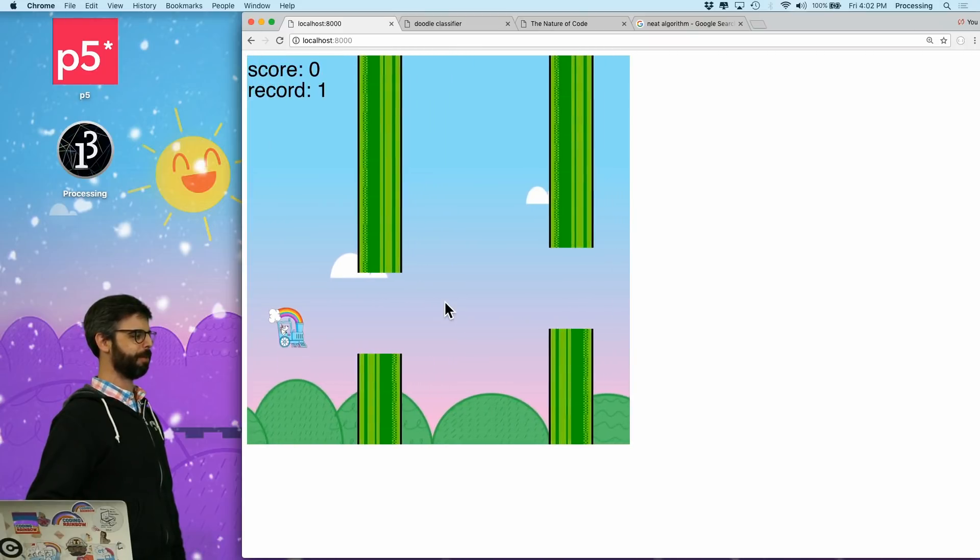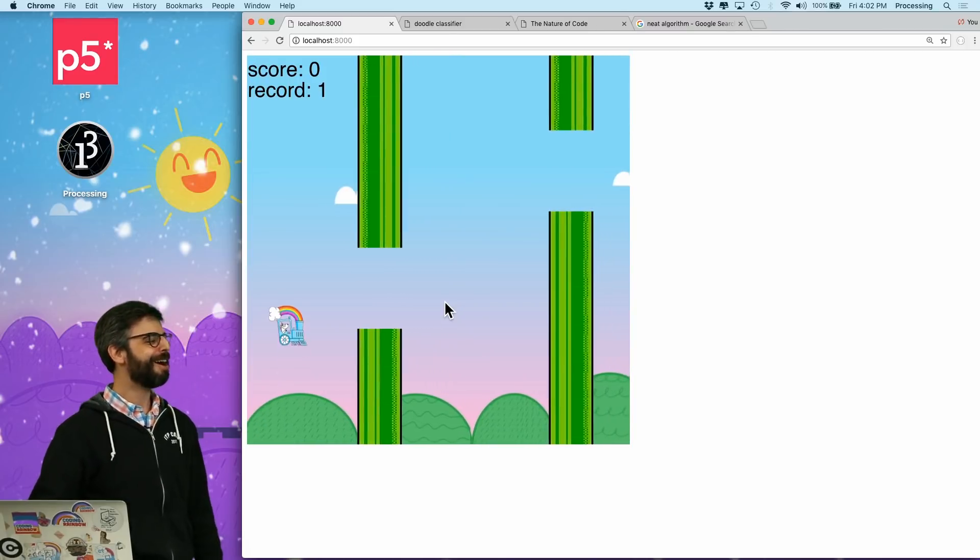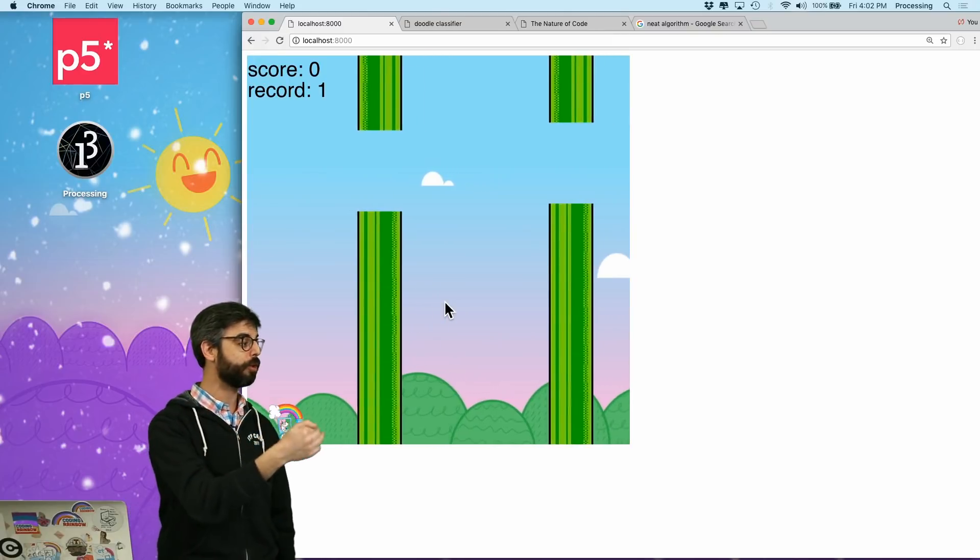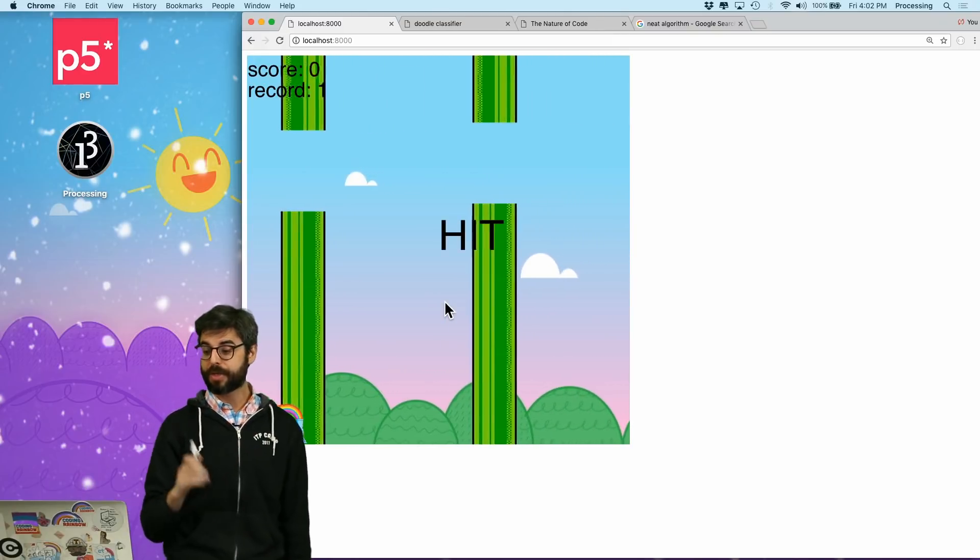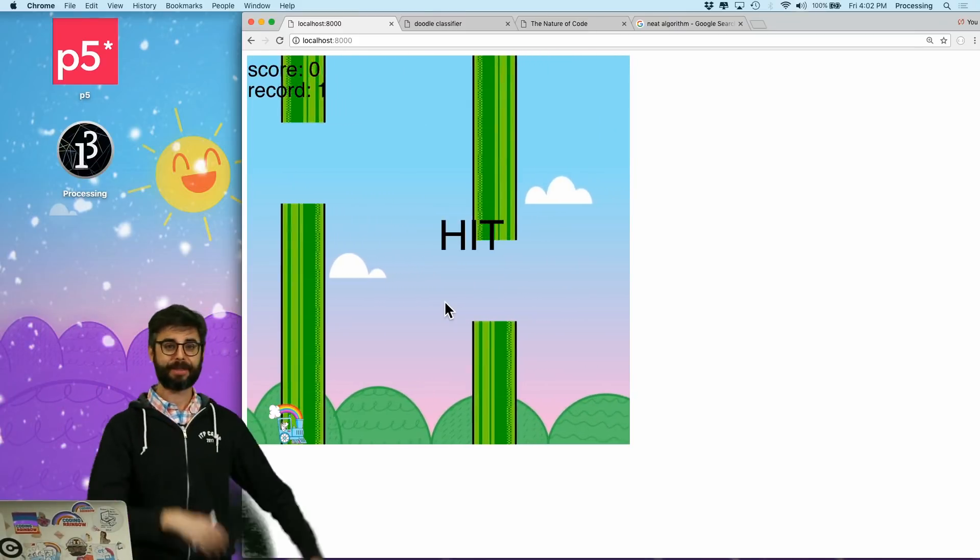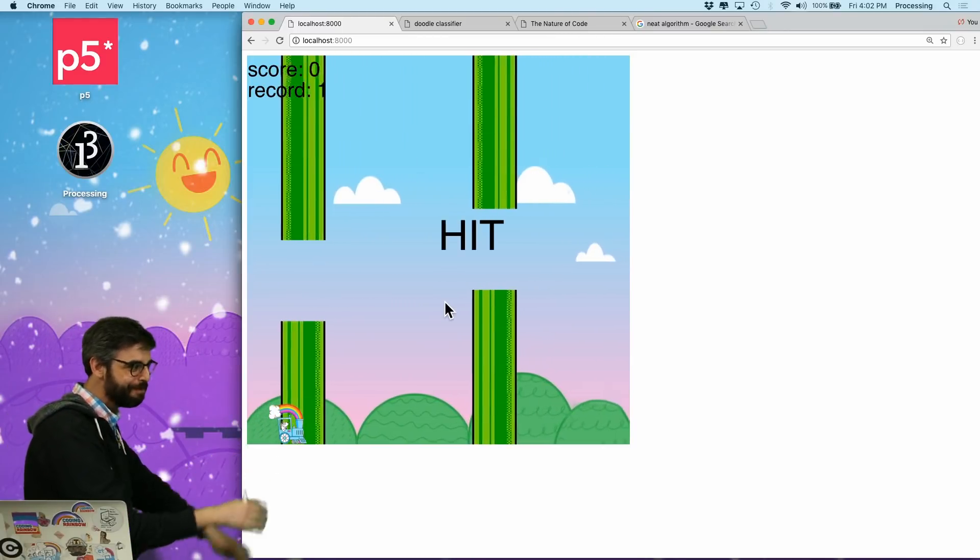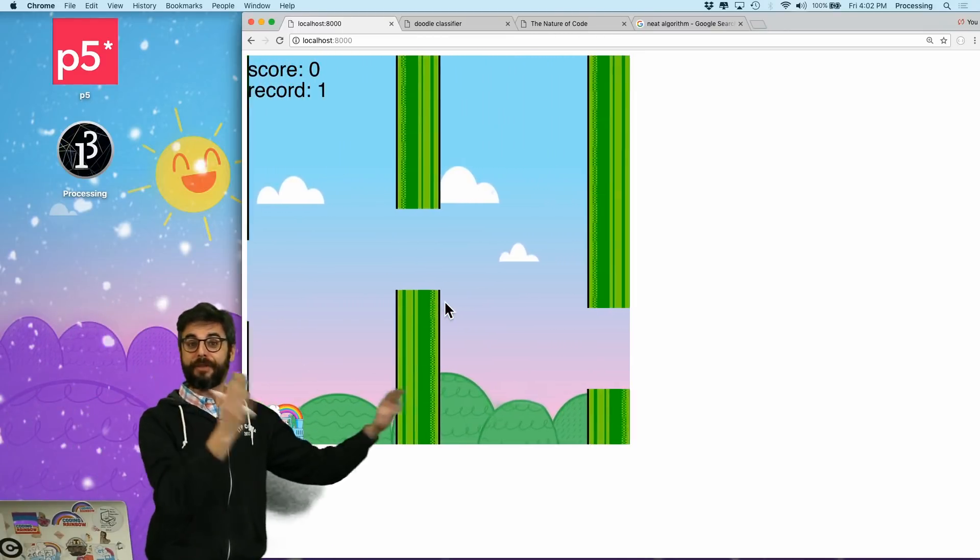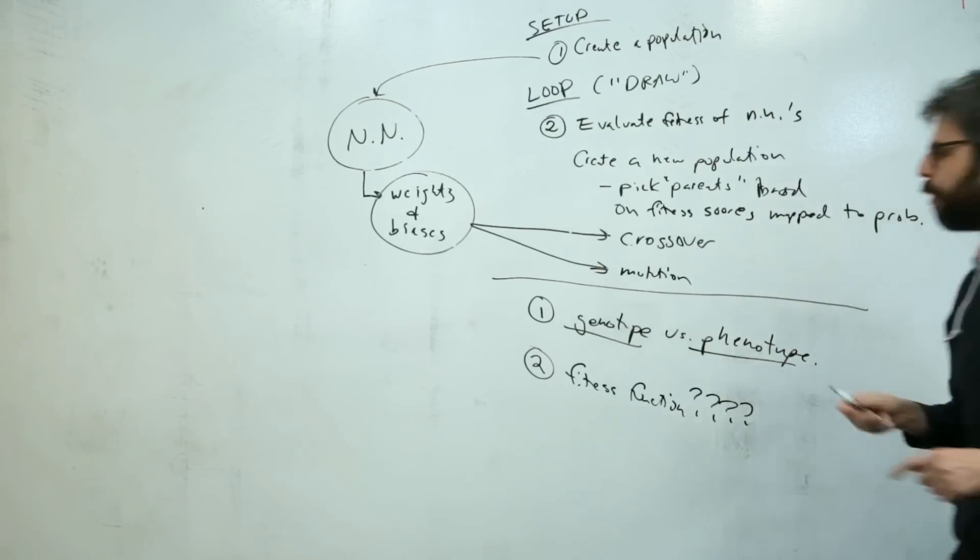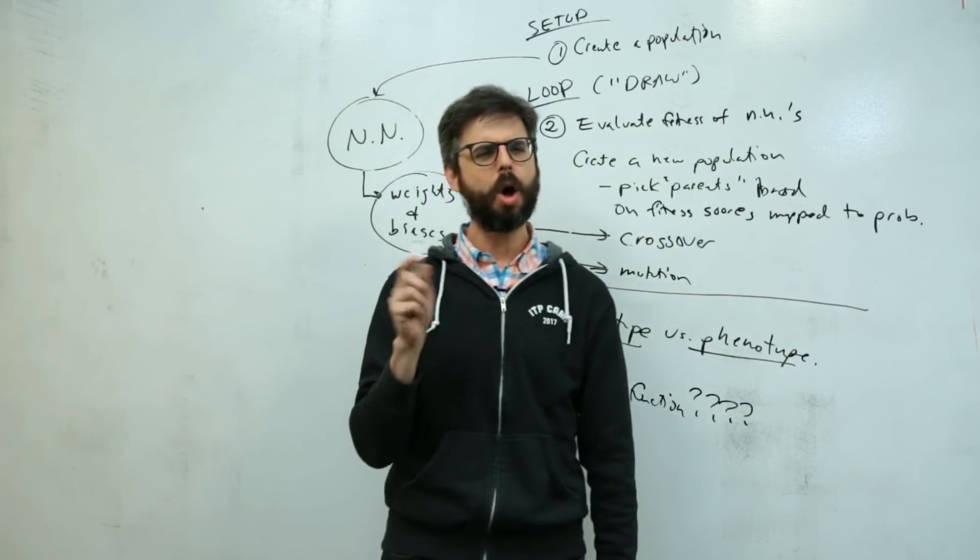It could just be how long am I able to go through this world without running into a pipe. I could say, hey, a thousand of you try playing this game, and your fitness is how long you last before you run into a pipe. So that is the fitness function. We have all the pieces.